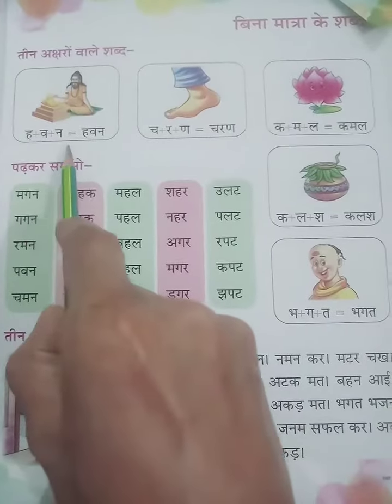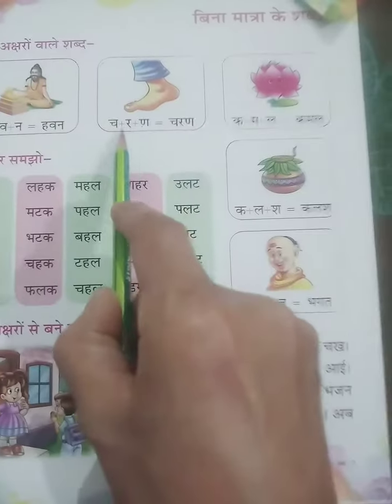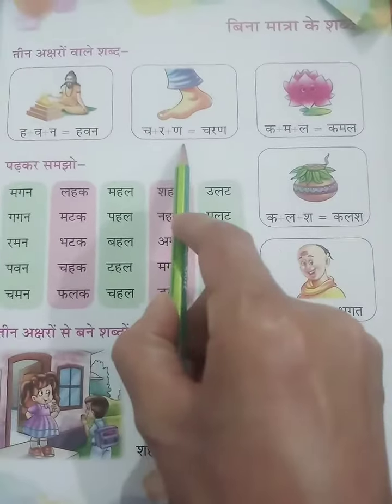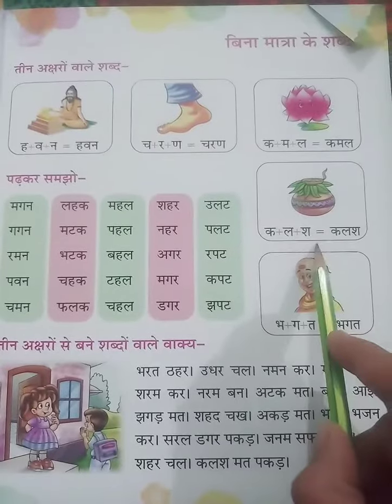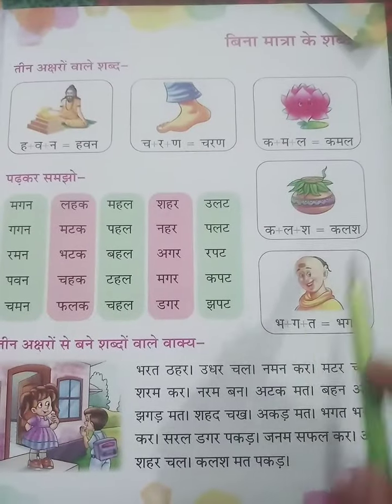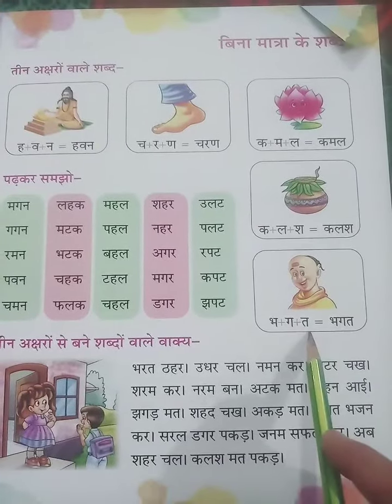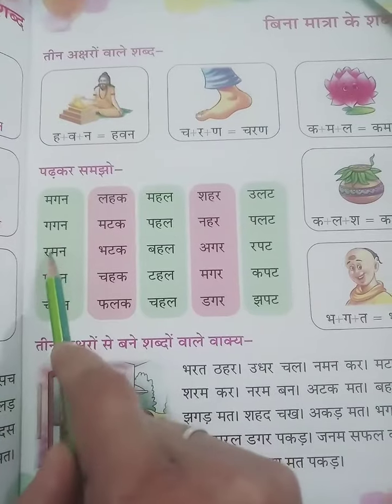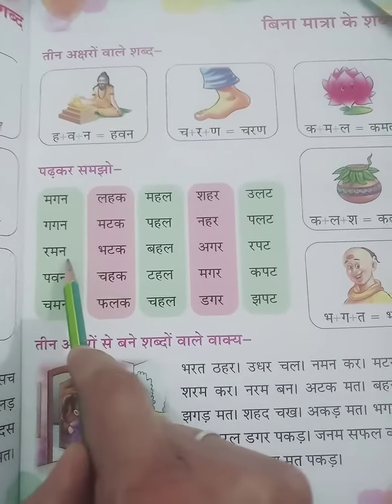Howan, Charan, Kamal, Kalash, Bhaagat, Magan, Gagan, Raman.